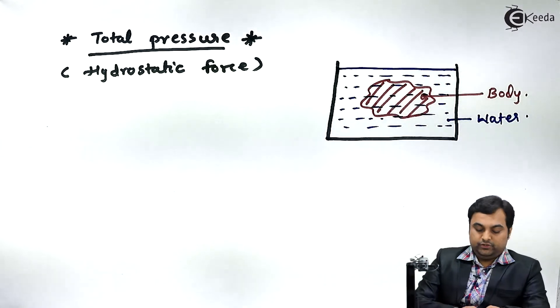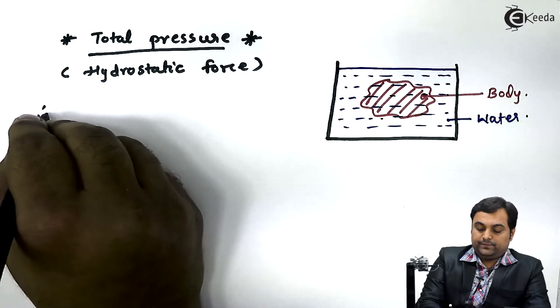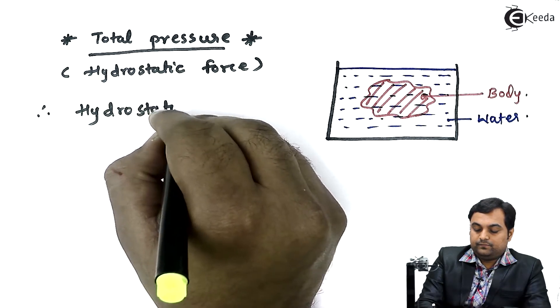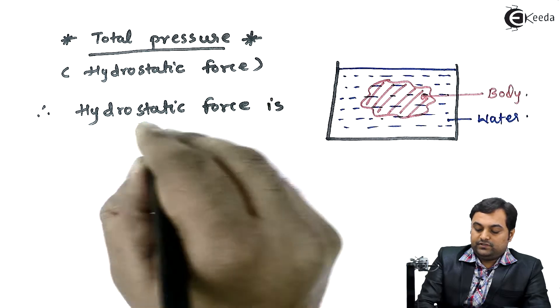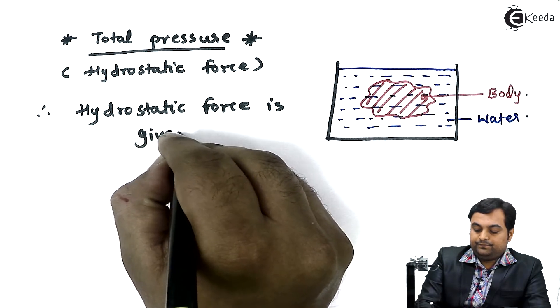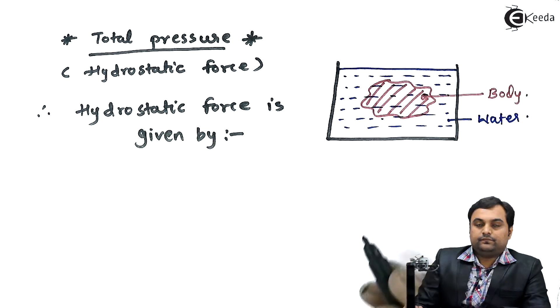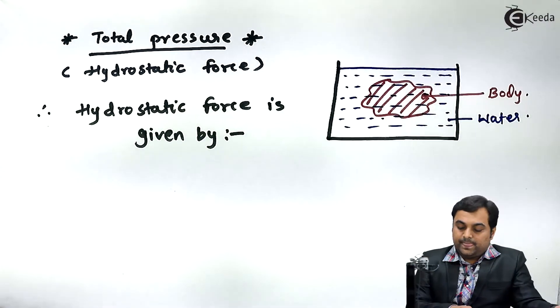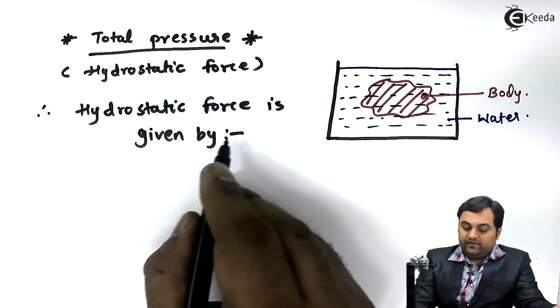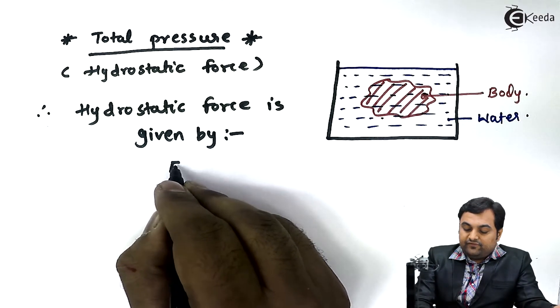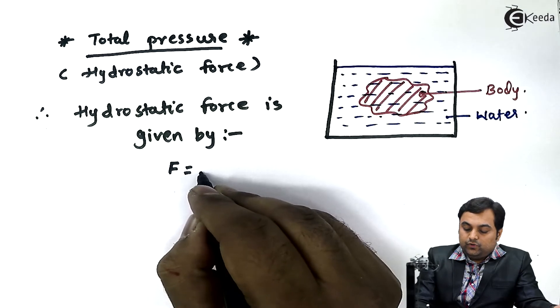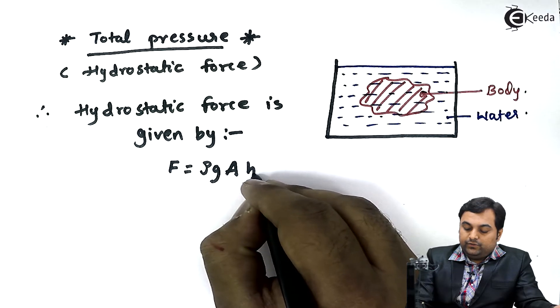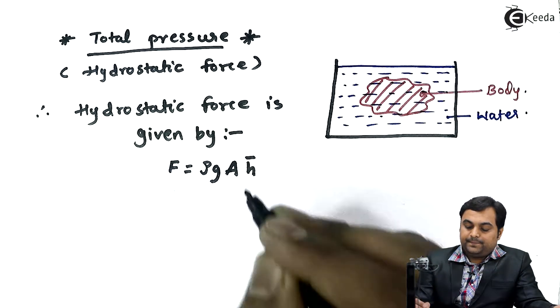Therefore, hydrostatic force is given by: if I consider hydrostatic force, then it would be given by F equals rho G A into H bar. Here I have the formula for hydrostatic force.